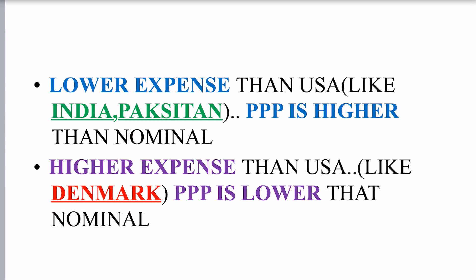And if a country has higher expenses than the USA, like Denmark, which is an expensive country, then PPP is lower than nominal. Higher expenses than the USA means PPP is lower.